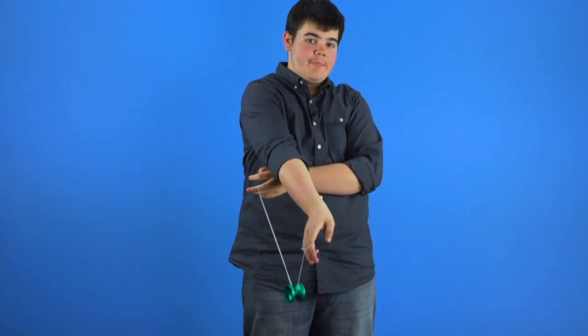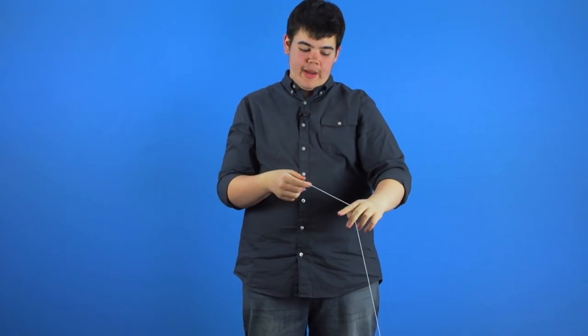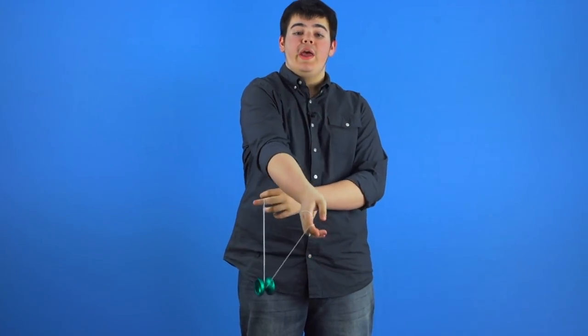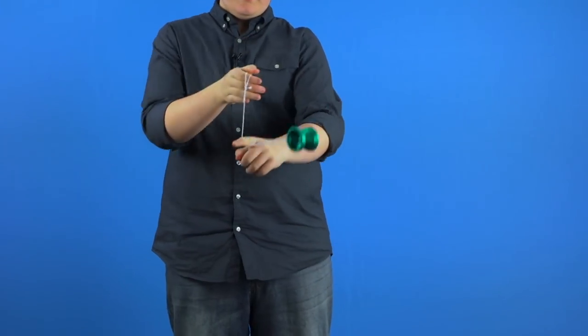Another really cool thing about boomerang is that it leads really well into the cross arm trapeze. Speaking of the cross arm trapeze, you can get into it right from the dismount of your bottom mount. Once you're here, you can perform all your cross arm trapeze variations.